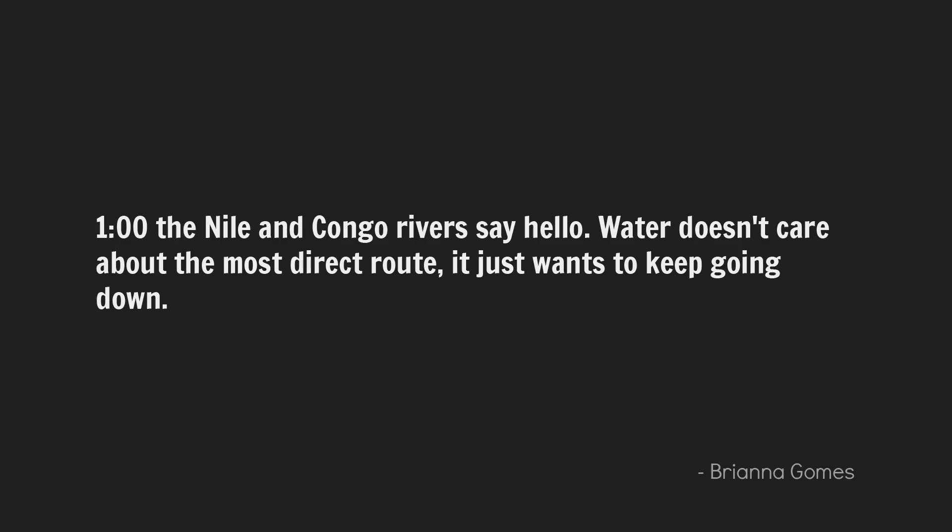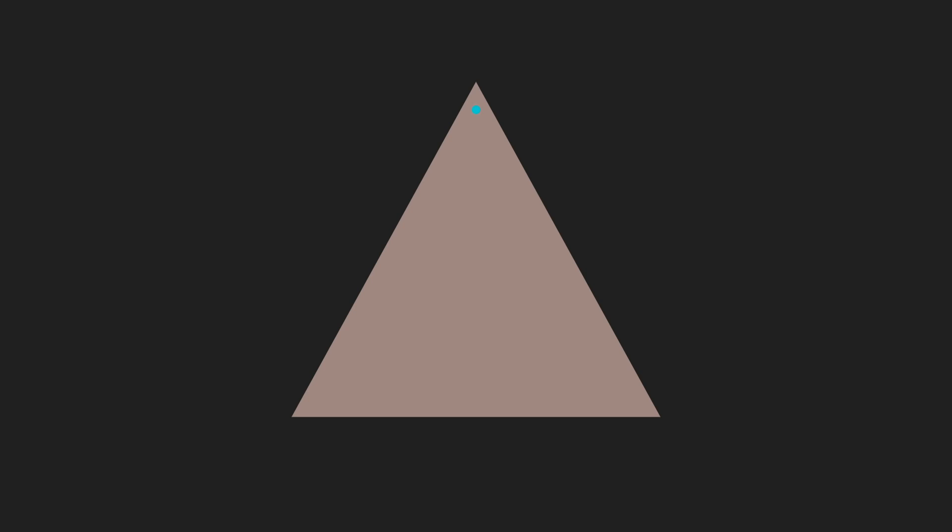The Nile and Congo rivers say hello. Water doesn't just care about the most direct route — it wants to keep going down, but it's only halfway there. Water actually cares about direct route and going down simultaneously. If you imagine a perfectly conical mountain with a source right at the top, water could go straight down or do a windy spiral — at all points in that spiral the water is going down — but water won't do that. Water cares about both downhill and direct route; it's a combination of both.